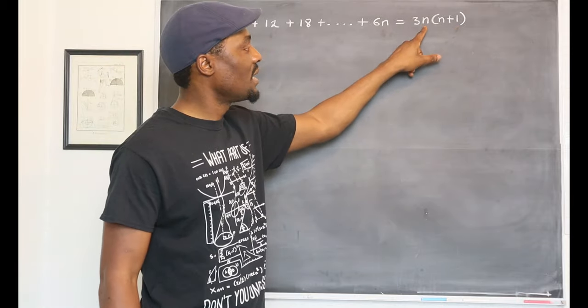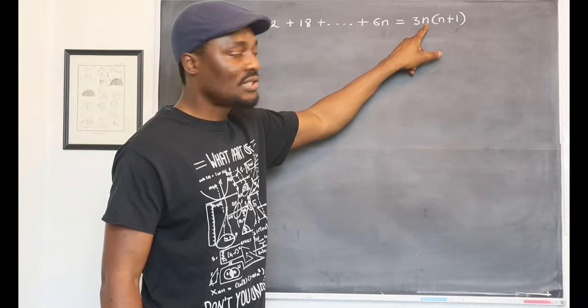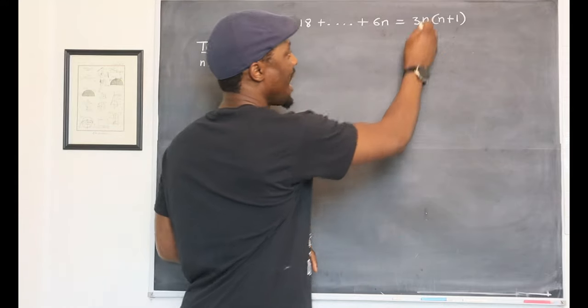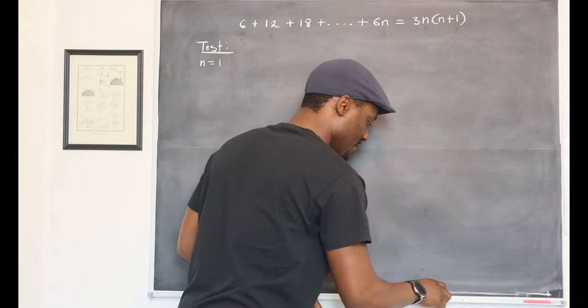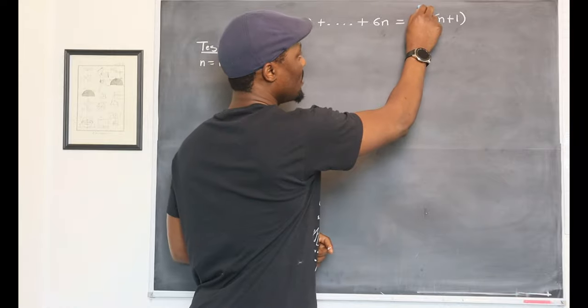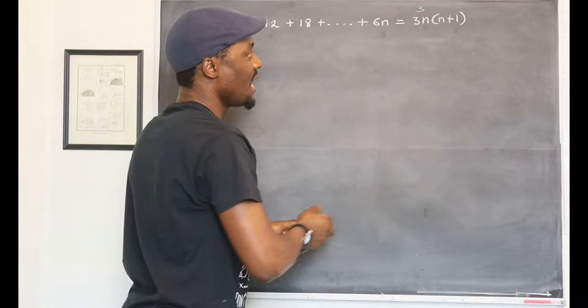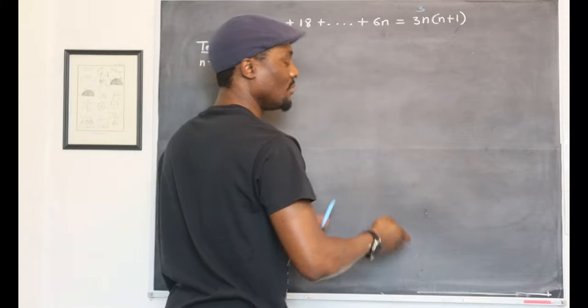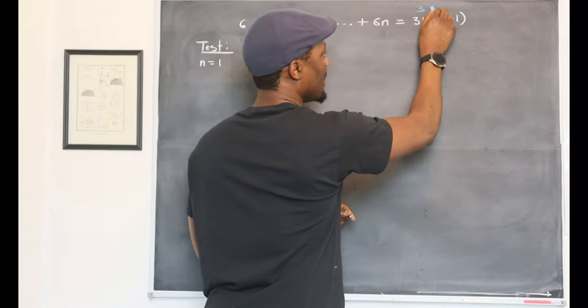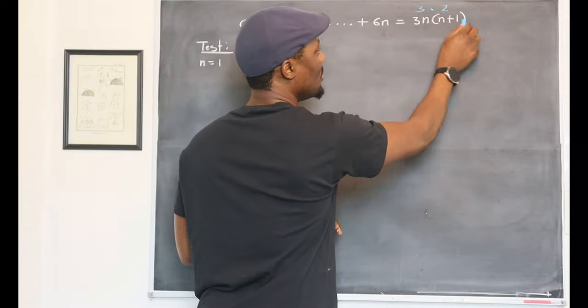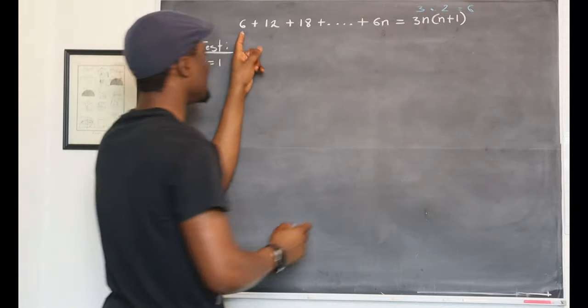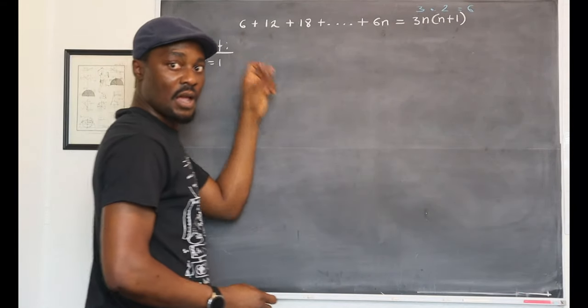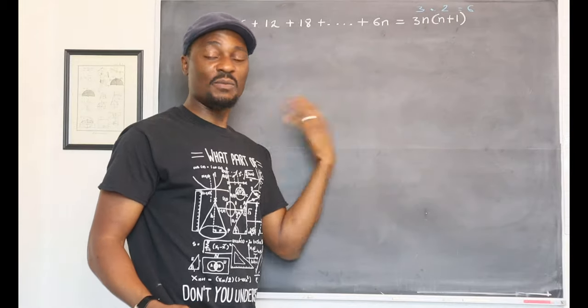If you plug in 1, 3 times 1 is going to be 3. Let me use a blue chalk. So we're going to have 3. And if you put 1 here, 1 plus 1 is 2, so you multiply that by 2. What is 3 times 2? It's equal to 6, which satisfies the first condition.